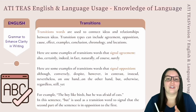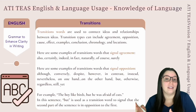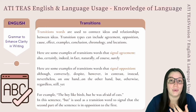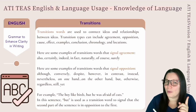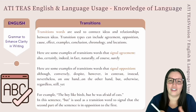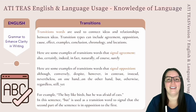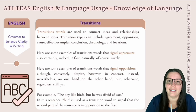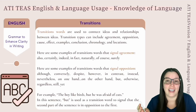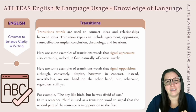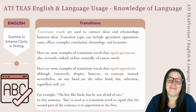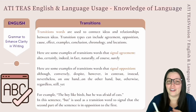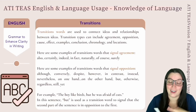Here are some examples of transition words that signal opposition: although, conversely, despite, however, in contrast, instead, nevertheless, on one hand, on the other hand, but, otherwise, regardless, still, and yet. That might have triggered some people with a couple of those words — I know it did me.